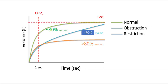We will now differentiate obstructive and restrictive lung diseases on the basis of various lung capacities measured by spirometry. The first lung capacity is FVC, which is forced vital capacity. It is the amount of air that can be forcibly exhaled from your lungs after taking the deepest breath possible.